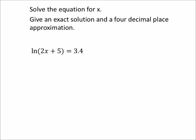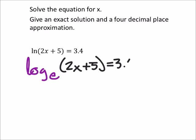So again, I'm going to change this so that it becomes an exponential form. So this would have been log base e of that 2x plus 5, which would have equaled 3.4. But if I want to change it to exponential form, then I've got e to the power of that 3.4 equals 2x plus 5.